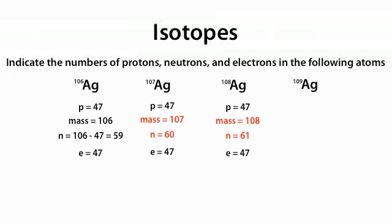Finally, we're given Ag-109. Ag is still silver, with a number of protons equal to 47, an atomic mass of 109, and a number of neutrons equal to 62. 109 minus 47 equals 62. The number of electrons is still always equal to the number of protons, which is 47.